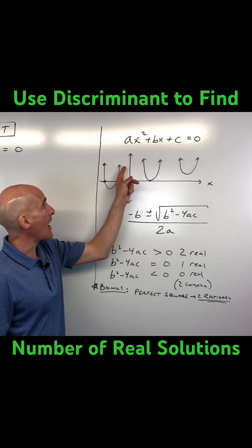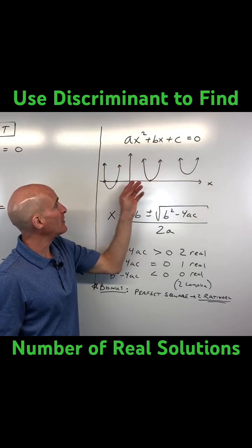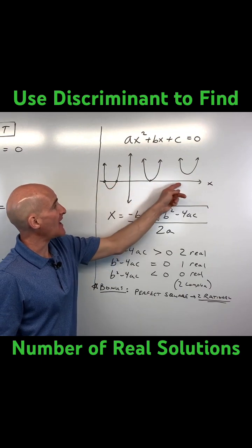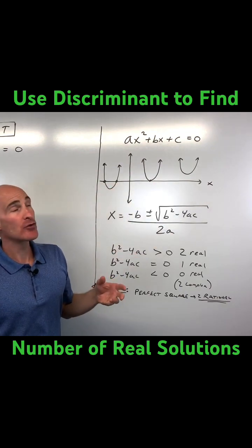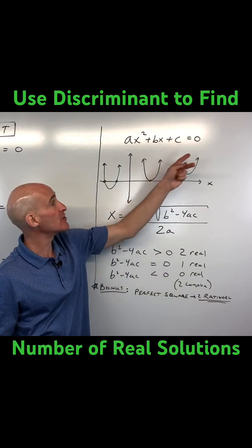A quadratic is a parabola when you graph it, and when that parabola crosses the x-axis, those are referred to as the zeros. It's what makes this equation equal to zero.